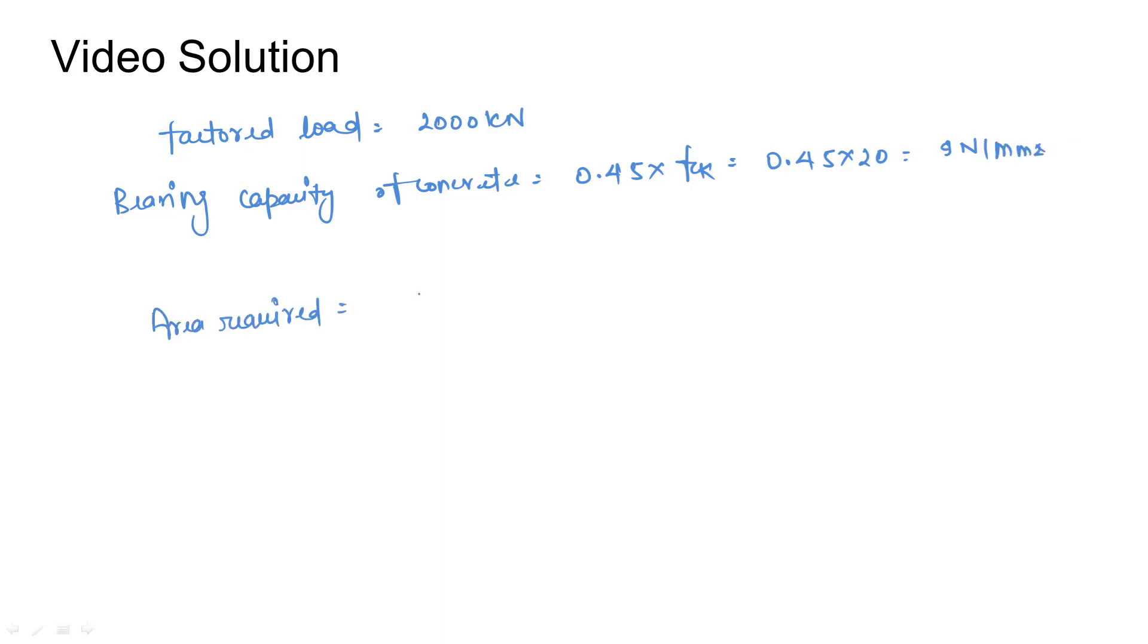Now area required will be factored load divided by bearing capacity. So it will be 2000 into 10 to the power 3 N divided by 9 N per mm square. So it will be 2.2 into 10 to the power 5 mm square.